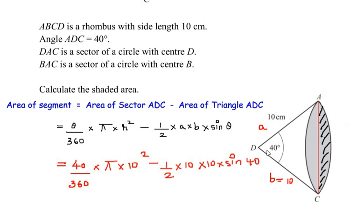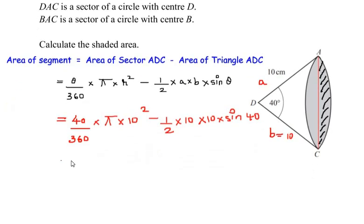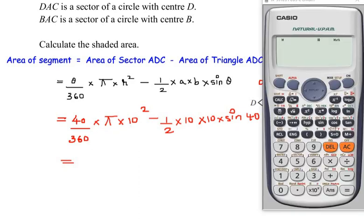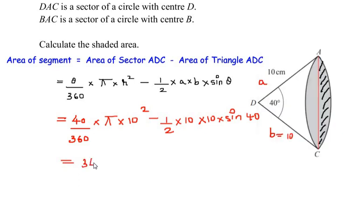Now let us calculate and find out what is the value. Let us find out the value of the first part. So we have here 40 times π times 10 squared is 100 over 360. So that will give us a value of 34.9065. I'm going to take till four decimal places to get the maximum accurate answer, so I'll write it as 34.9065.